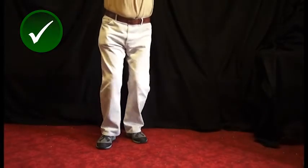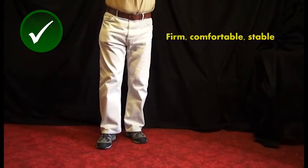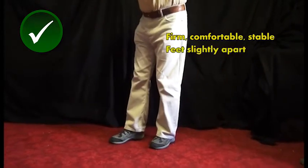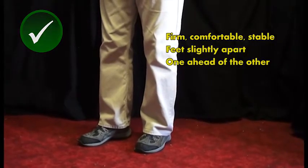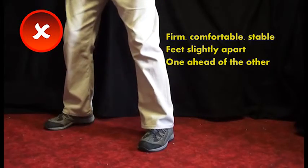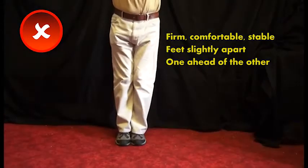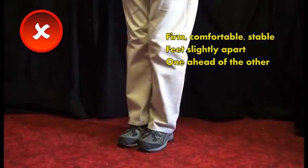When you're raising a bell, you need a firm, comfortable, and stable stance, just like you do when you're ringing normally. Try and get the feet slightly apart, one in front of the other. That's a nice stable base. Avoid, if you can, having your feet wide apart or jammed firmly together.